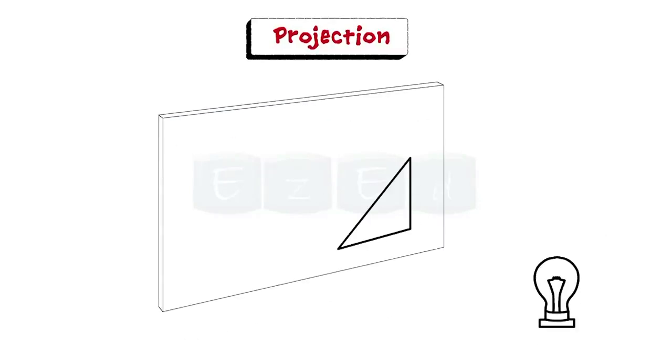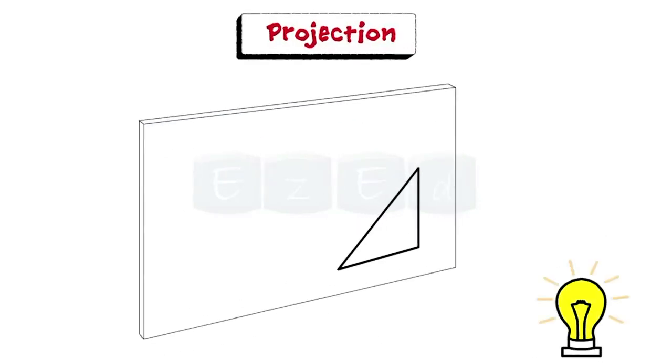First, let us see what is projection. Consider an object placed in front of a light source. When the light is turned on, the rays project the outer surface of the object onto the screen. The object that appears on the screen is the projection of the original object.